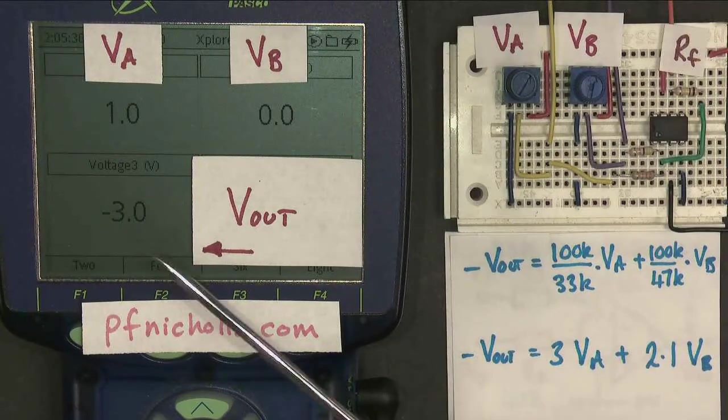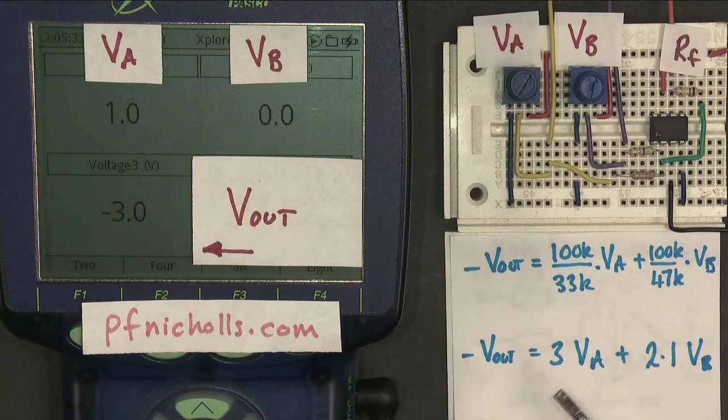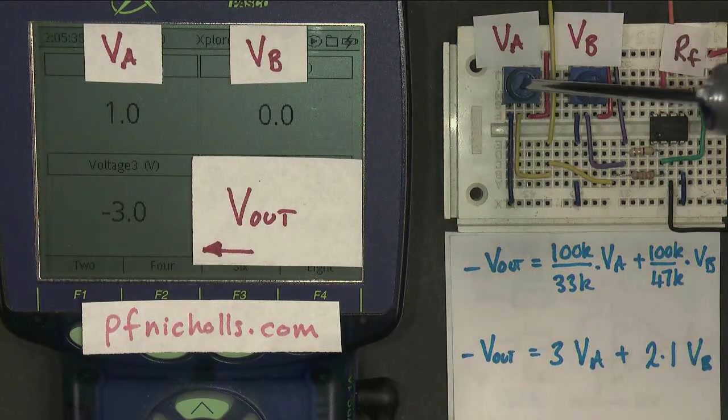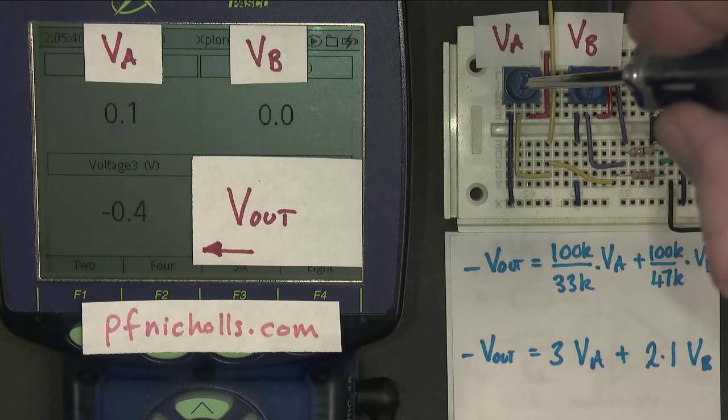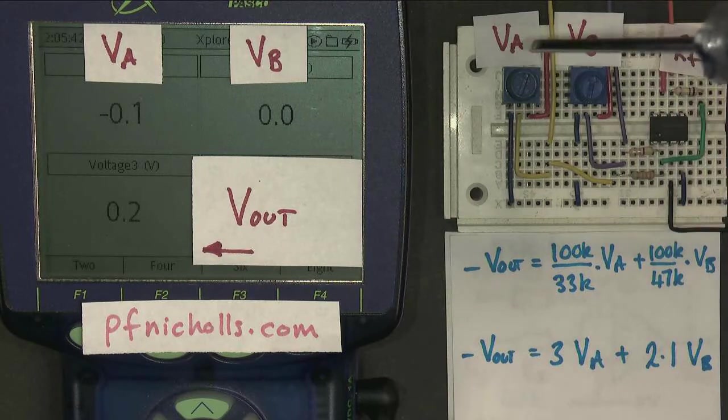And there we go. The output is 3 volts with a minus sign. 1 volt times 3 is minus 3. Now the hard bit, which I didn't manage earlier in the video. Set this back to zero. There we go. That's close enough.